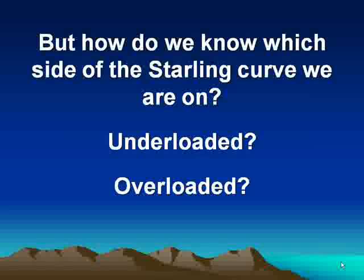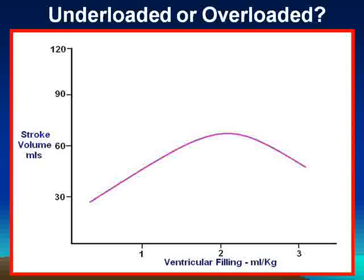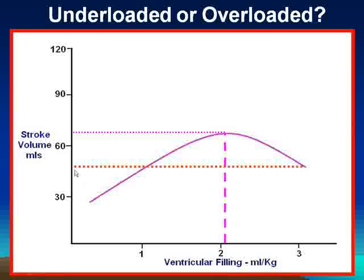The problem, though, is how do we know which side of the Starling curve we're on? Are we underloaded? Are we overloaded? Well, let's take a mild failure curve and say that the preload is actually optimum. In this situation, we would generate a 70 mil stroke volume. But what if the stroke volume was somewhat lower? Is that because we're underloaded, or is it because we're overloaded?